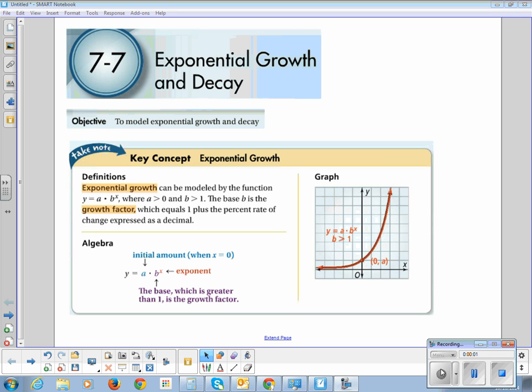Alright, so we're going to talk about 7-7, exponential growth and decay. Our learning objective is to model exponential growth and decay. So this is broken up into two parts, the growing part and the decaying part. The circle of life. You live and you grow, and then you start shrinking as you're older.